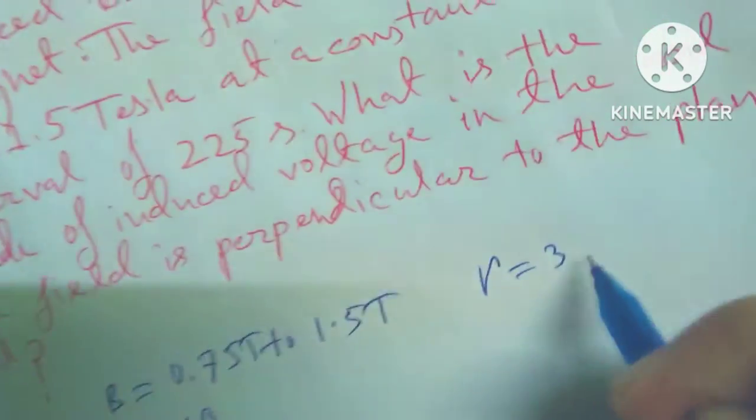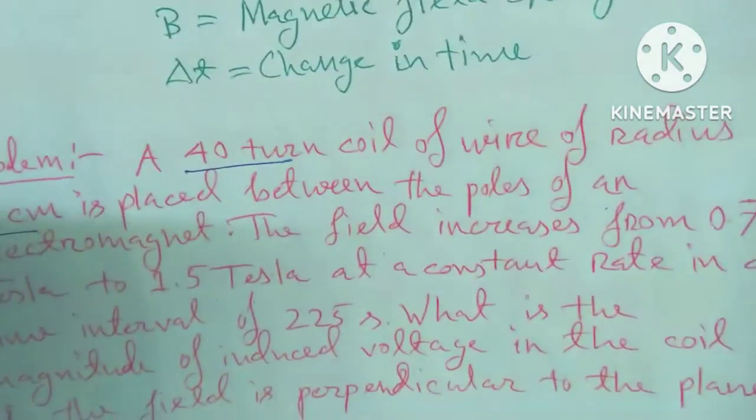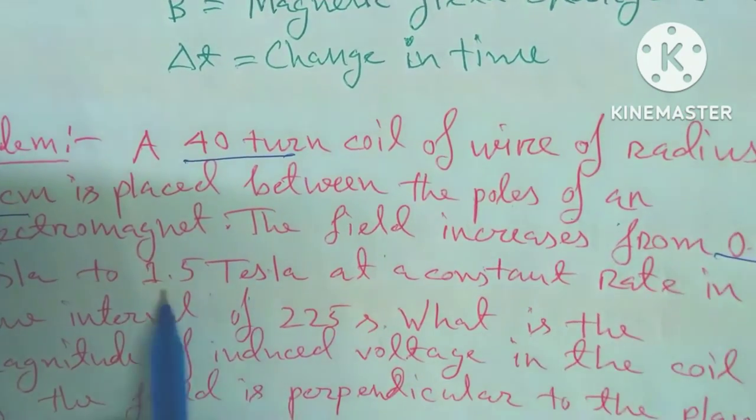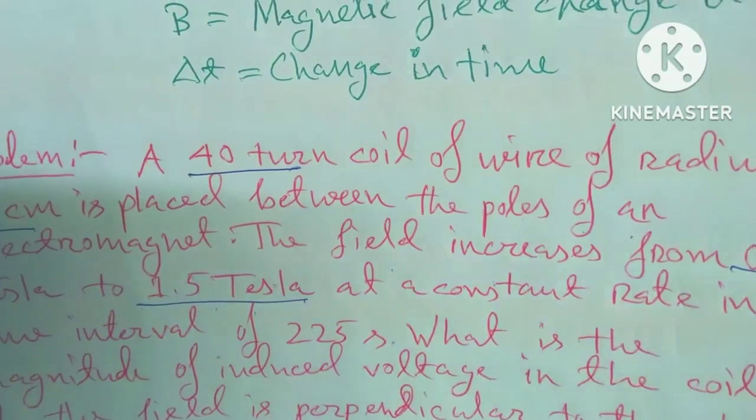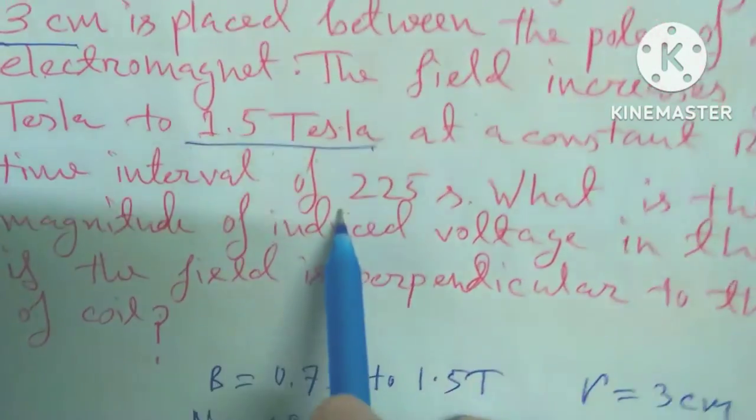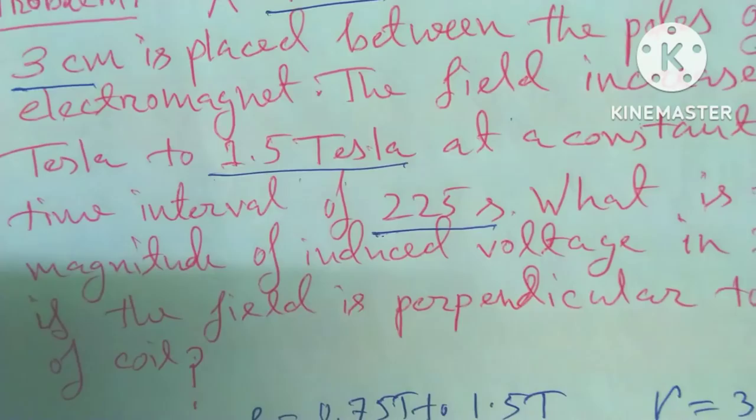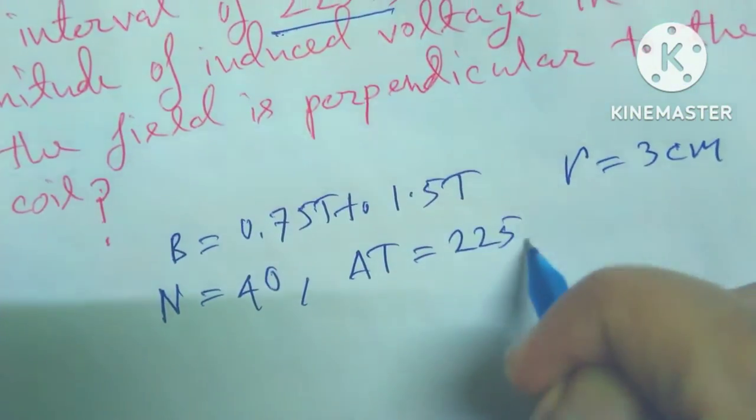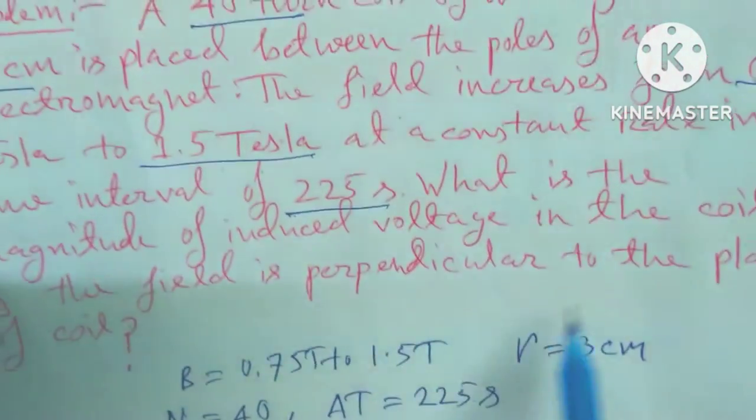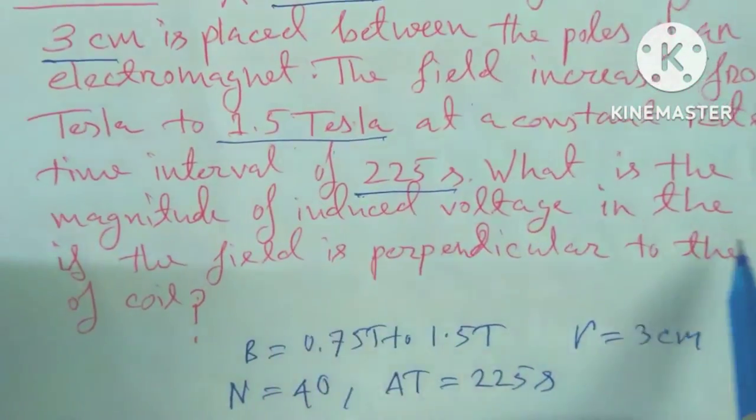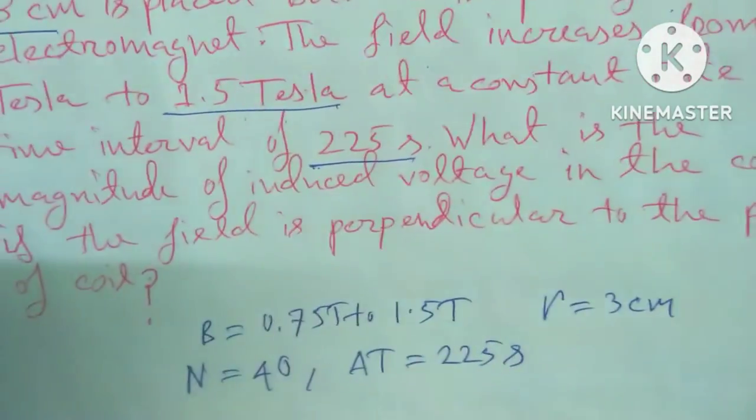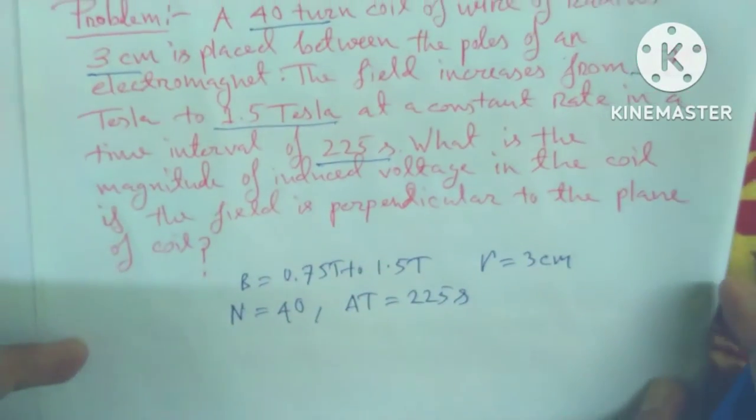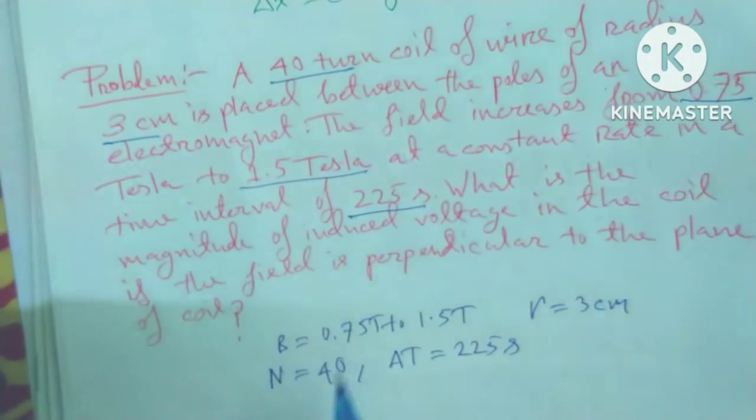And we see the field increases at a constant rate in a time interval of 225 milliseconds, so del t equals to 225 seconds. And what is the magnitude of the induced voltage in the coil if the field is perpendicular to the plane of the coil?